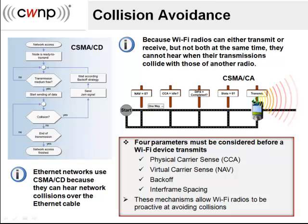Wi-Fi devices are not capable of hearing or detecting data collisions on the wireless network. Therefore, the first goal of 802.11 protocols is to minimize collisions. There are several steps in this process. The first step is called Carrier Sense — this is where the wireless station senses the air to determine if another station is already transmitting.